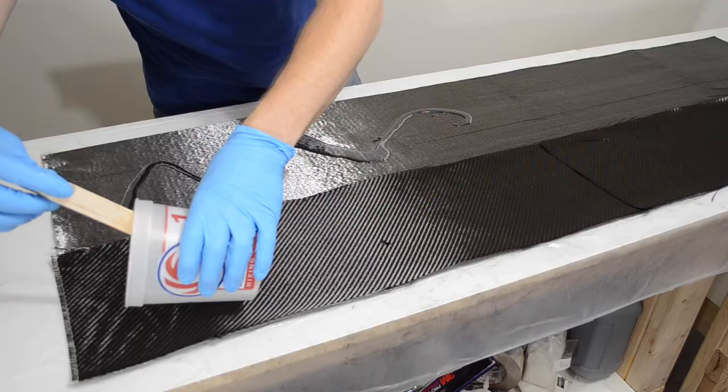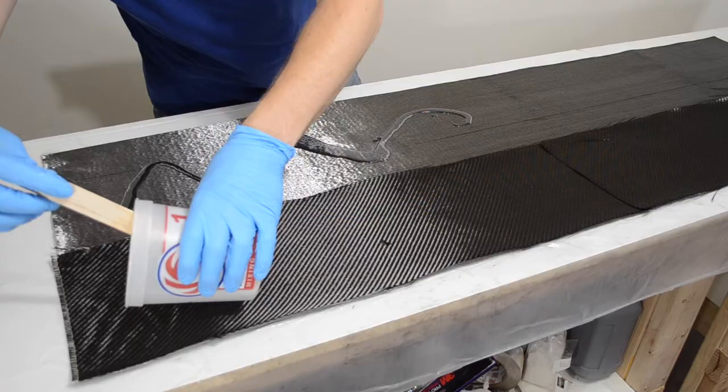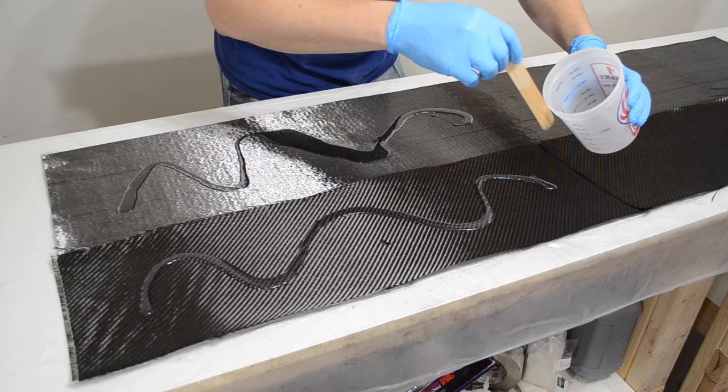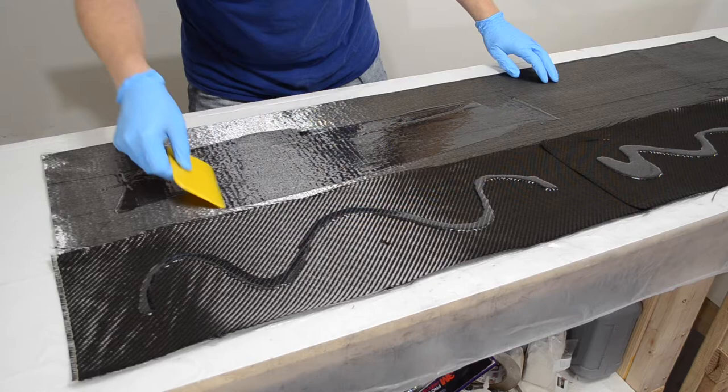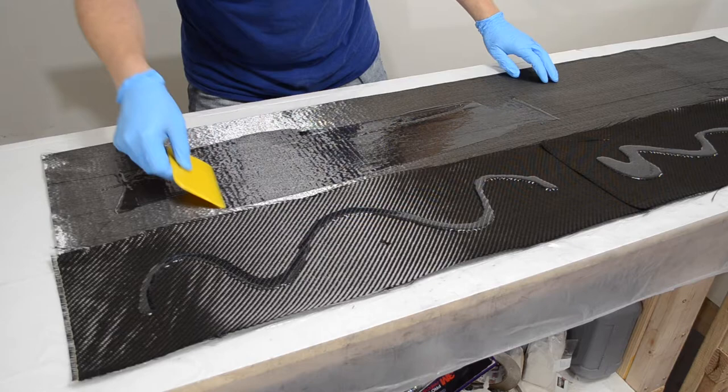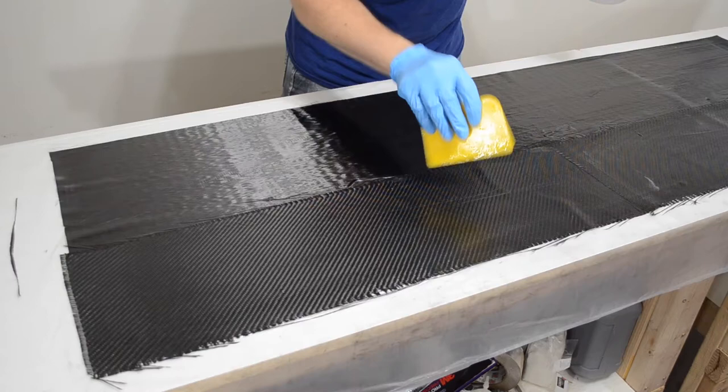After a quick coat of mold release wax on my mandrel, I was ready to mix epoxy. For this layup, I mixed 170g of epoxy, which turned out to be plenty. Remember when spreading epoxy with a squeegee on unidirectional fabric, always squeegee in the direction of the fibers. If you squeegee 90 degrees to the fibers, you could make a really big mess in a hurry.